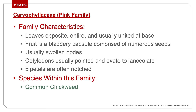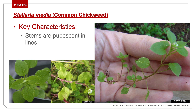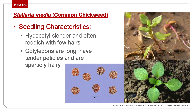Caryophyllaceae — the pink family. Leaves are opposite, entire, and usually united at the base, with usually swollen nodes. Common chickweed — winter annual with light green, opposite, egg-shaped leaves; no hair on leaf blades but hair on stem and petiole. Stems are pubescent in lines with swollen nodes. Hypocotyl is slender and often reddish with few hairs. Cotyledons are long with tender petioles and are sparsely hairy.